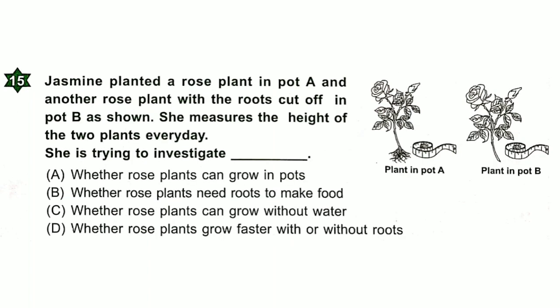Question 15: Jasmine planted a rose plant in pot A and another rose plant with its roots cut off in pot B as shown. She measures the height of the two plants every day. She is trying to investigate. Answer is option D.